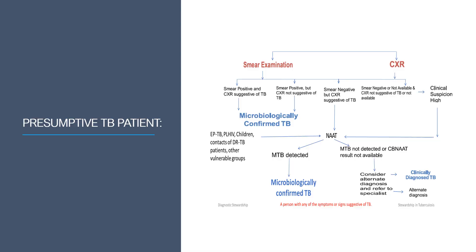For a presumptive TB patient, smear examination and chest X-ray are done. If smear is positive or chest X-ray is suggestive, it is confirmed as microbiologically confirmed TB. If smear is negative or not available and chest X-ray does not suggest TB, then based on clinical suspicion a nucleic acid amplification test is initiated. If MTB is detected, it is microbiologically confirmed TB; if MTB is not detected, consider alternate diagnosis based on clinical suspicion.